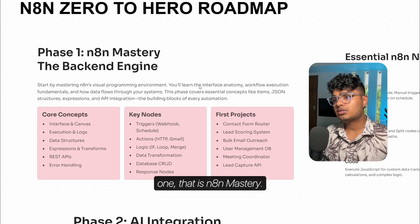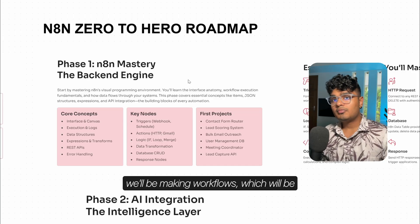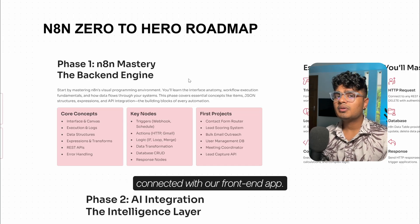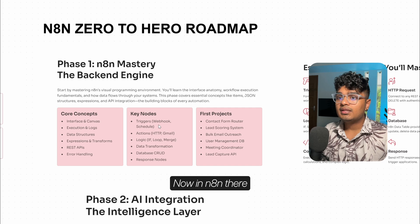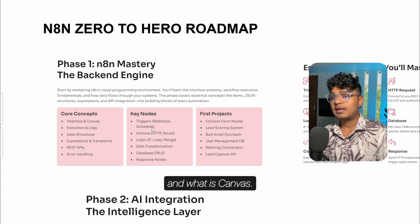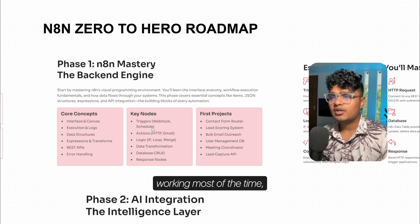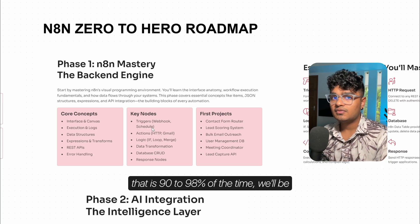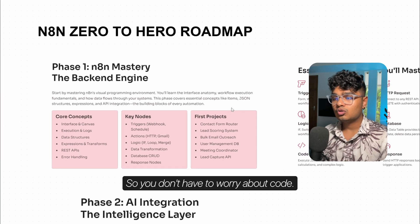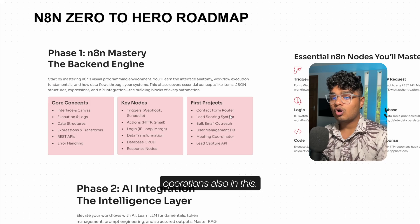Let's talk about Phase 1: n8n Mastery. The backend engine of our whole operation will be n8n, because we'll be making workflows that run in the background and connect with our frontend app. In n8n there are a lot of core concepts. First, you should understand the interface and what the canvas is — the canvas is where we'll be working most of the time. About 90–98% of the time we'll be working with no-code automations, though custom code operations are also available.